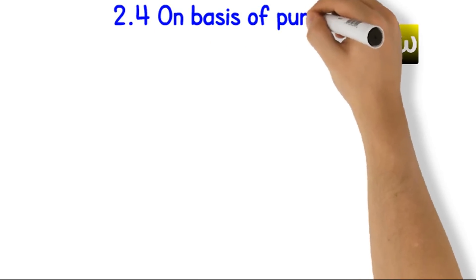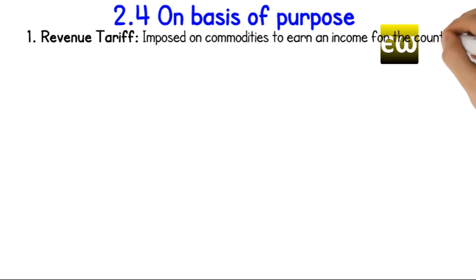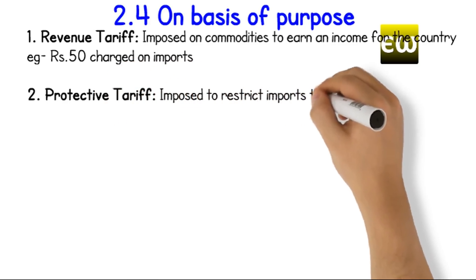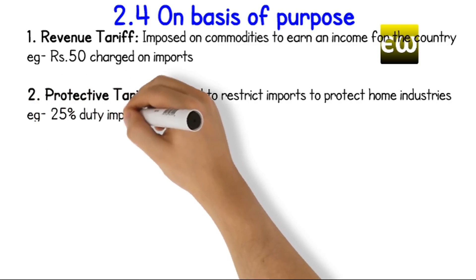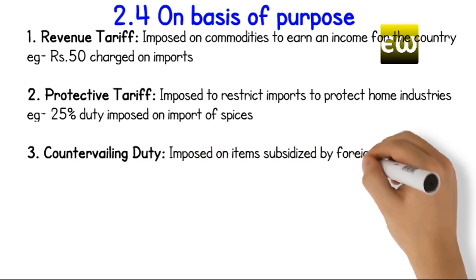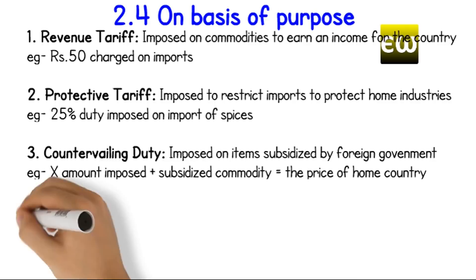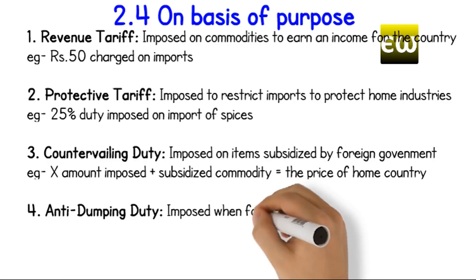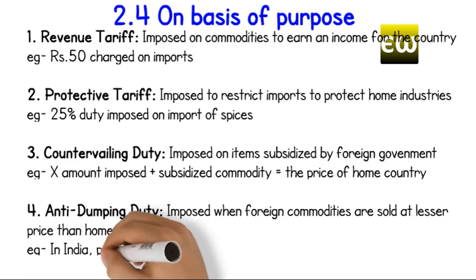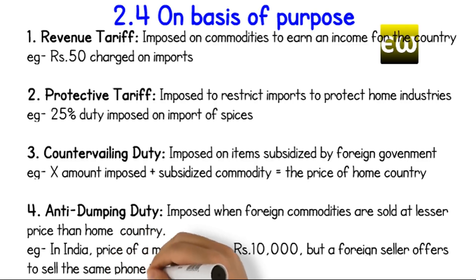On the basis of purpose: 1. Revenue tariff — imposed on commodities to earn income for the country; for example, rupees 50 charged on imports. 2. Protective tariff — imposed to restrict imports and protect home industries; for example, 25% duty imposed on import of spices. 3. Countervailing duty — imposed on items subsidized by a foreign government; for example, X amount imposed so that subsidized commodity price equals the price in the home country. 4. Anti-dumping duty — imposed when foreign commodities are sold at a lesser price than in the home country; for example, in India the price of a mobile phone is rupees 10,000, but a foreign seller offers to sell the same phone for rupees 5,000.